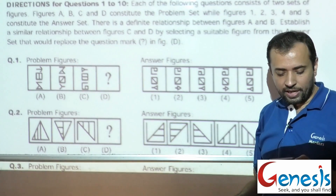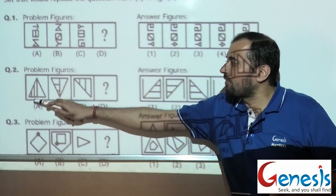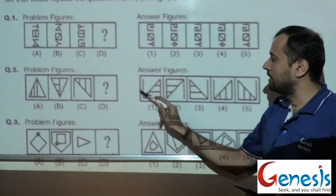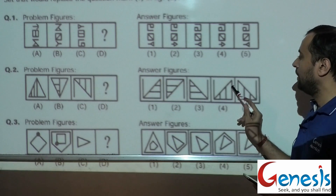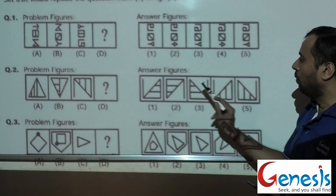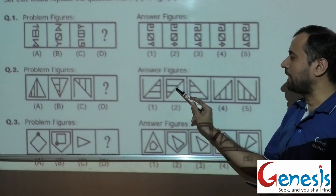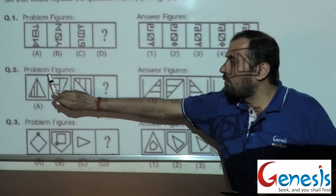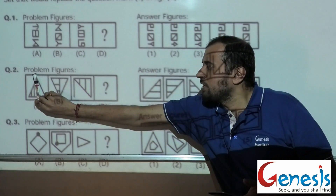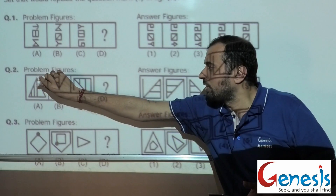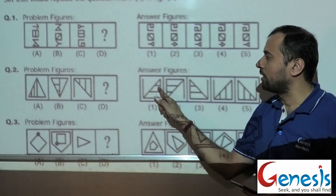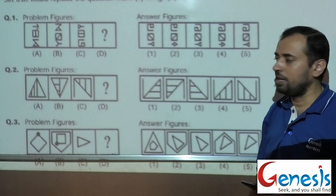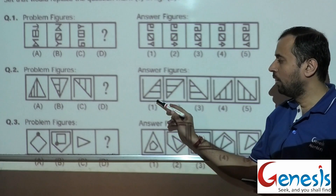Moving on to the second problem. Here we see first of all the triangle is inverted, so this bucket would also be inverted. Barring frame 1, in all other cases the bucket is being inverted — meaning the orientation of this triangle would definitely be similar. The lines which are vertical would become horizontal. So here also the lines vertically should become horizontal, and the inverted image of this bucket is being taken. It means the correct answer is going to be frame number 1.